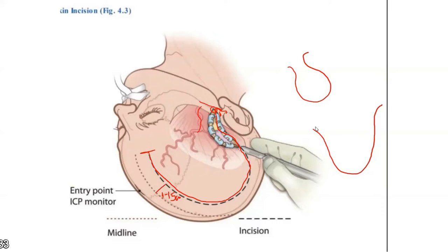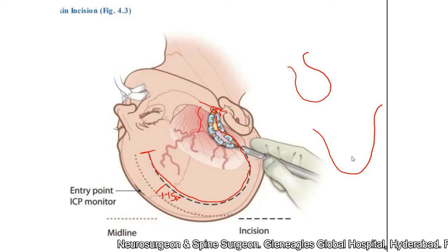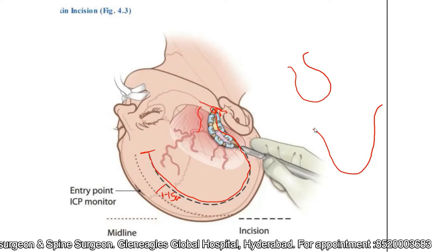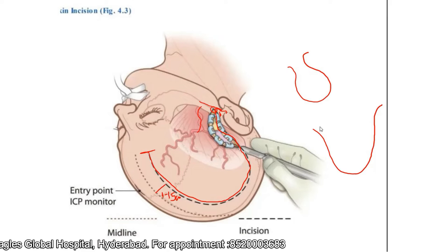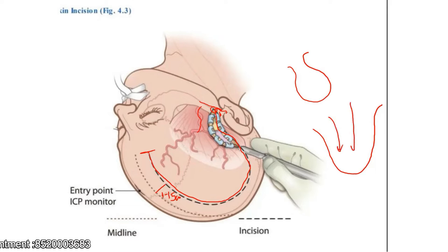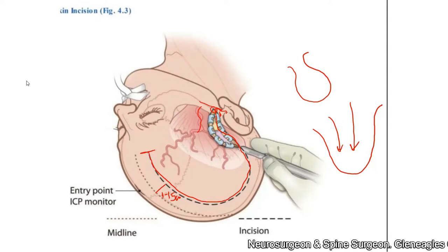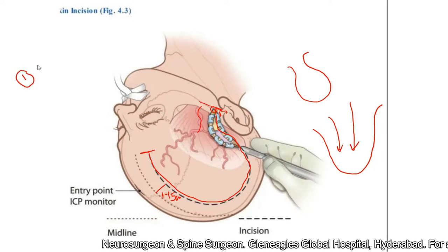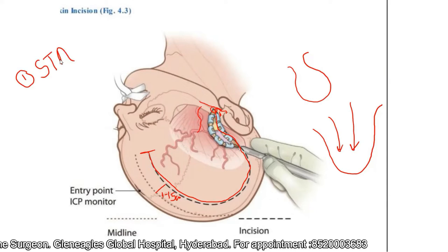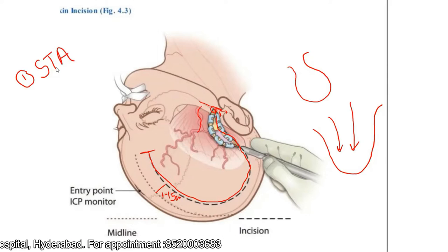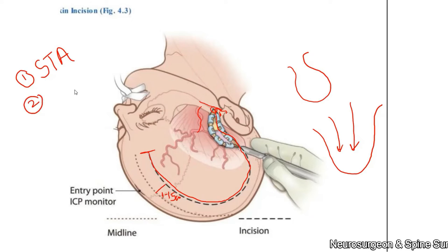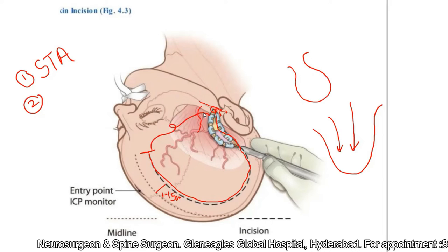If possible, we try to ensure that the base of the flap is at least equal to the length of the flap, though that may not always be possible. We keep the flap as wide as possible to ensure sufficient vascularity reaches the flap so there is no necrosis. To ensure vascularity, we take two precautions: preserve the superficial temporal artery by palpating it in front of the tragus, and ensure the base of the flap is as wide as possible.